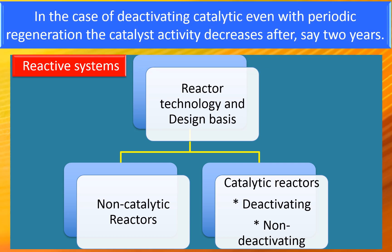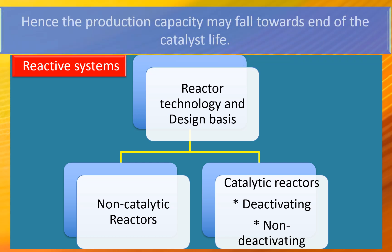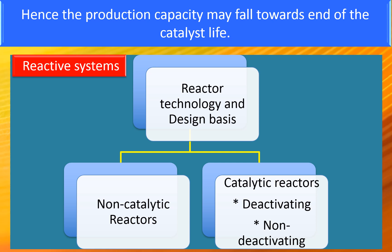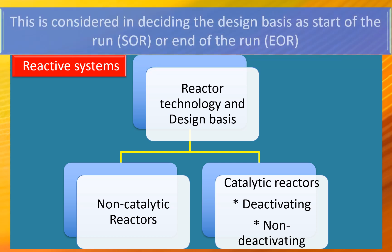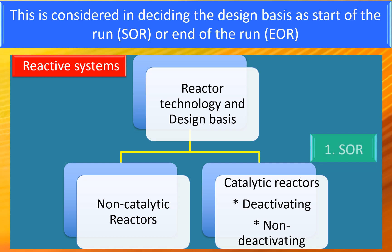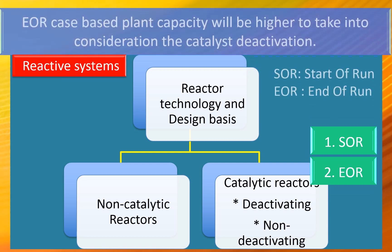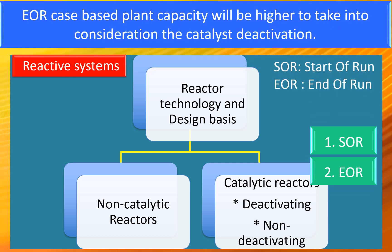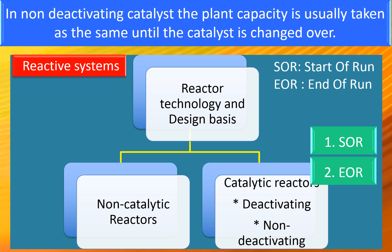In the case of deactivating catalysts, even with periodic regeneration, the catalyst activity gets reduced after, say, two years. Hence, the production capacity may fall towards the end of the catalyst life. This has to be considered in deciding the design basis as start of run (SOR) or end of run (EOR). An EOR case-based plant capacity will be higher to account for catalyst deactivation. In non-deactivating catalysts, the plant capacity is usually taken as the same until the catalyst is changed over.